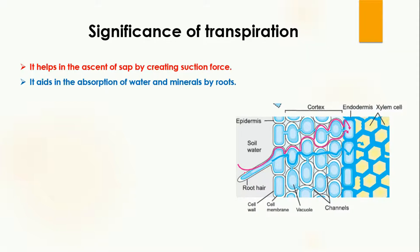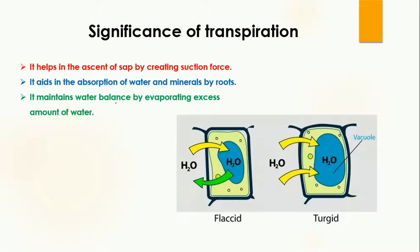Transpiration also maintains water balance by evaporating excess amounts of water. If too much water is present in the cells, they will become turgid and may even rupture. To overcome this situation, excess water is removed out of the cell by the process of transpiration, keeping the cells in a normal state.